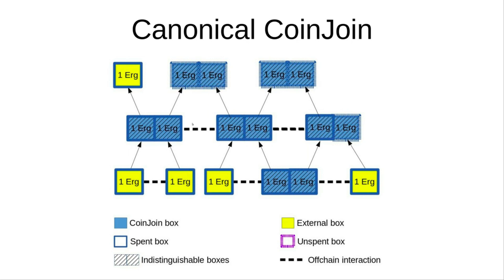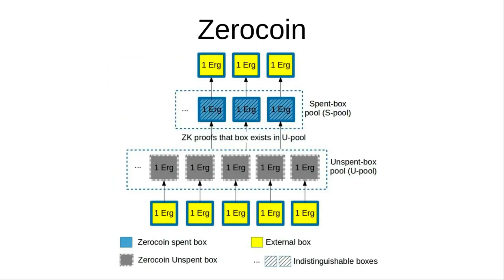Now let's discuss ZeroCoin. ZeroCoin is similar to CoinJoin in that the boxes are of the same amount. Looking at ZeroCoin from an individual perspective: somebody deposits one ERG box to what we call the unspent pool, or u-pool. Many people do this — say five people have deposited such boxes. Later, when I want to spend my box, I need to remove it from the pool. But I am not actually removing it directly — I am emulating the removal. This is the transaction I am doing: the box is removed and then spent like a normal box.